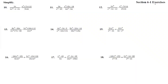Here we are in section 6-1, exercises 10 through 18. We're asked to simplify fractions that are being multiplied. The key here is that multiplication simply attaches the top to the top and the bottom to the bottom. So if we factor each of them, the multiplication makes it as though it's all one big fraction, and any factor on top can cancel with any factor on the bottom.